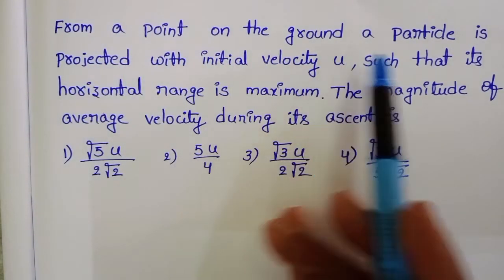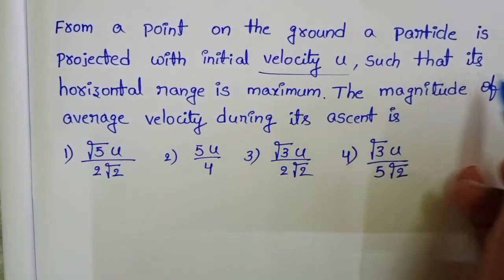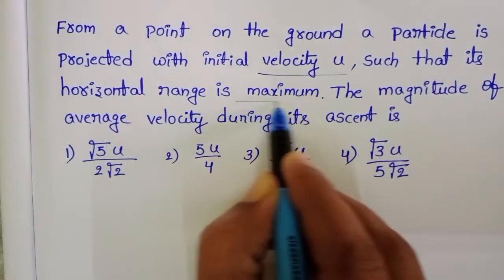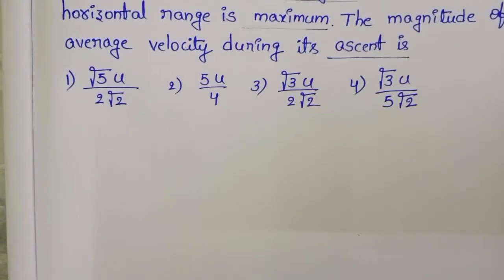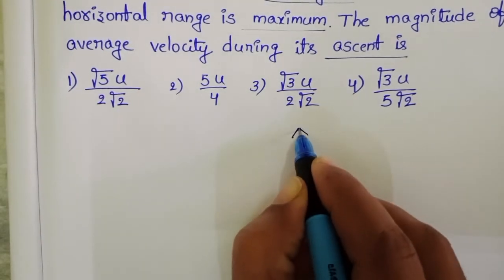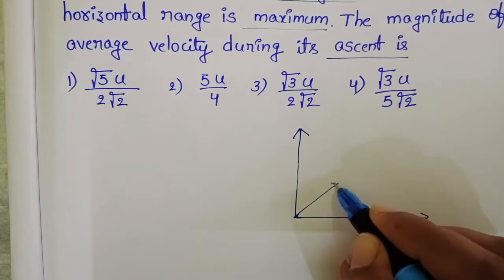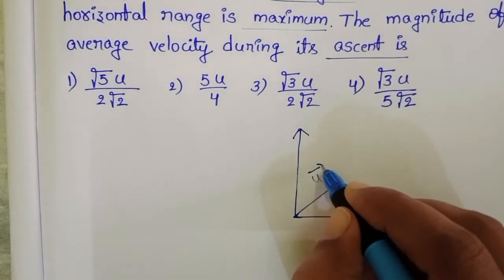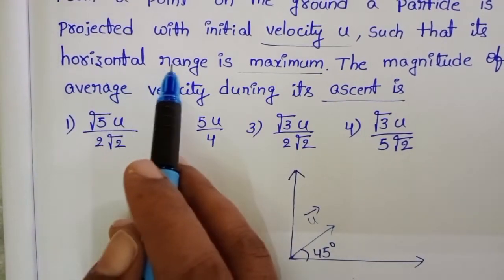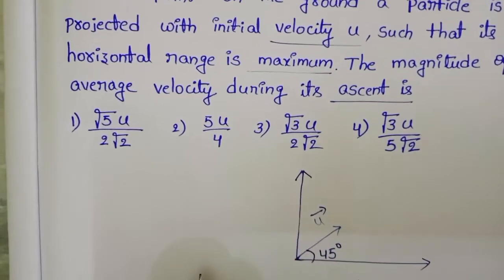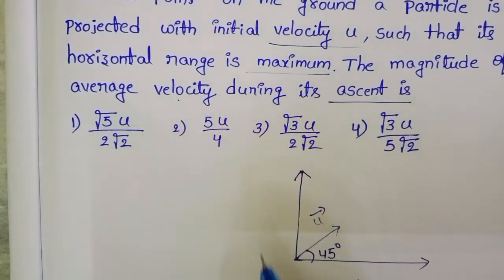From a point on the ground, a particle is projected with initial velocity u such that its horizontal range is maximum. We need to find the magnitude of the average velocity during its ascent. Since the range is maximum, the particle is projected at 45 degrees with the horizontal.